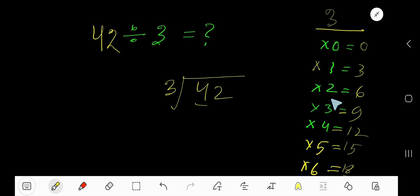1 time. 1 time 3 is 3. Subtract 1. Bring down this digit. Now your current dividend, or working dividend, is 12. 3 goes into 12 how many times?